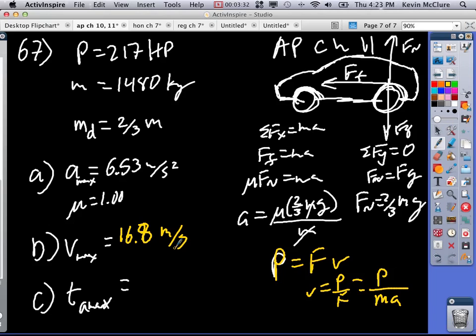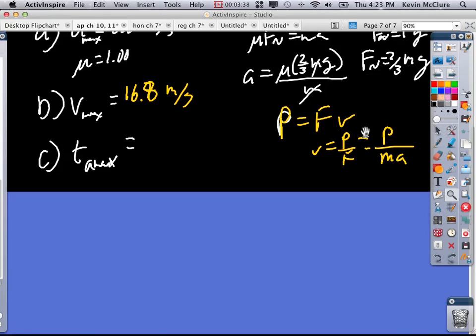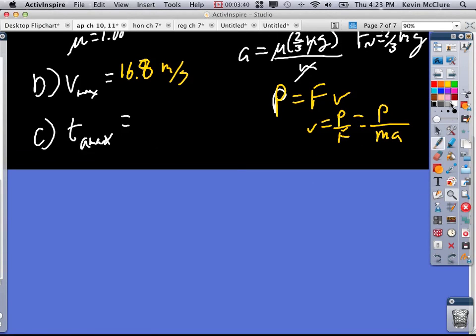We can say from 0 to this speed, right? So the equation that would probably serve us best here is to say VF is equal to V0 plus AT. So T is equal to VF minus V0 over A.